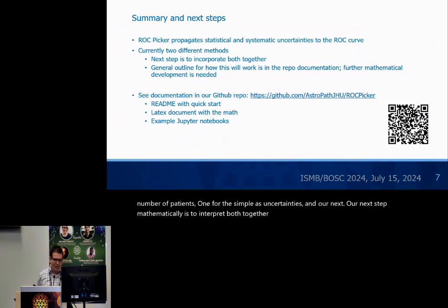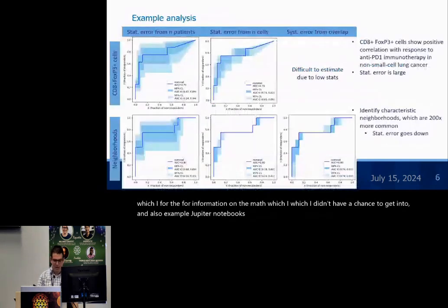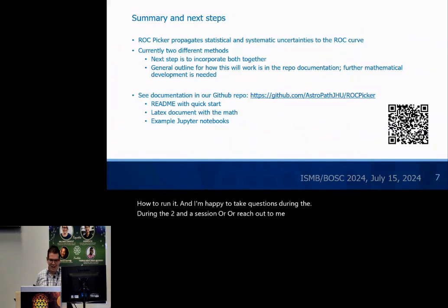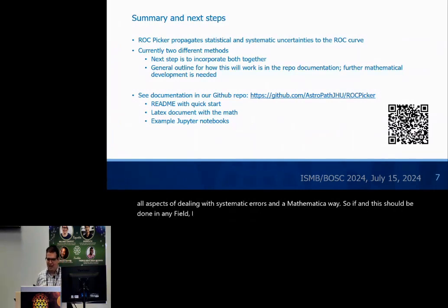Take a look at our repository documentation for information on the math, which I didn't have a chance to get into, and also example Jupyter notebooks that reproduce these plots and some other examples of how to run it. I'm happy to take questions during the Q&A session or reach out to me separately. I'm very excited about dealing with systematic errors in a mathematical way, and this could be done in any field — I've even had social scientists interested in talking to me about it, so if anyone's interested, please let me know. Thank you.